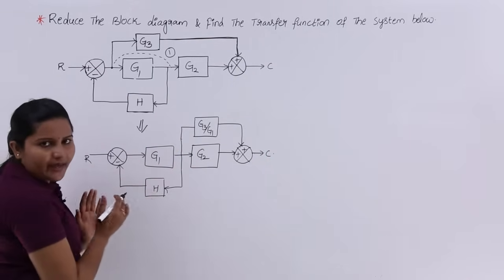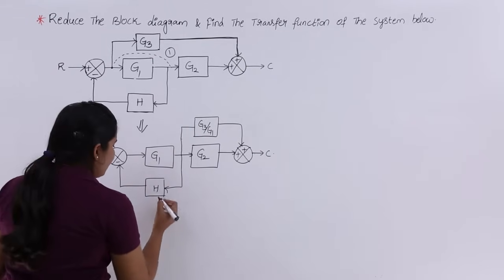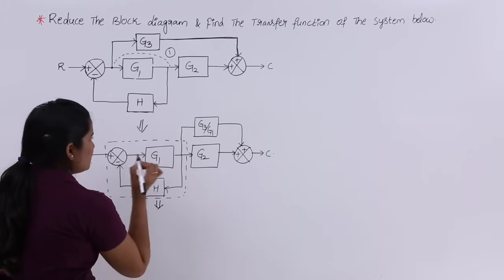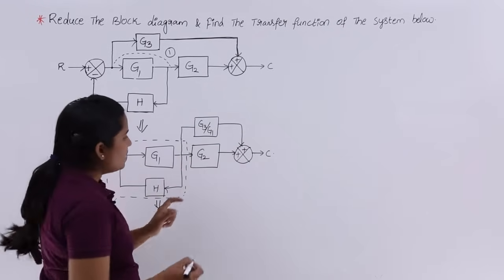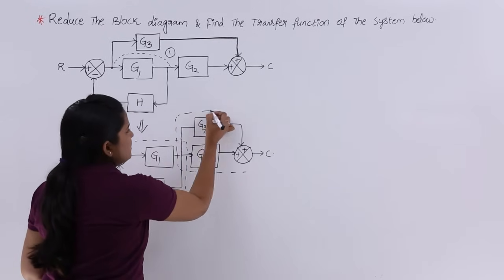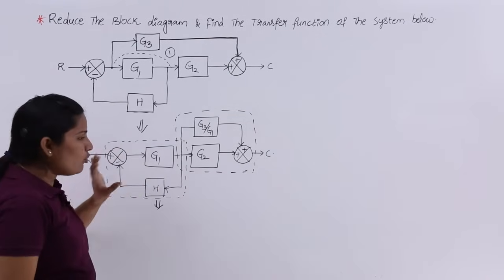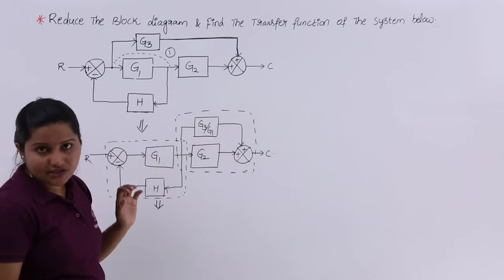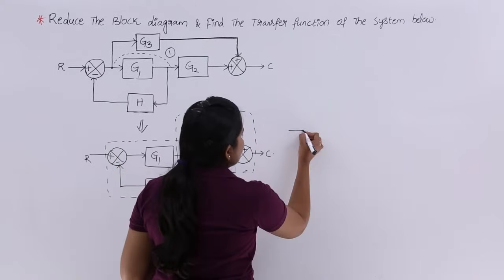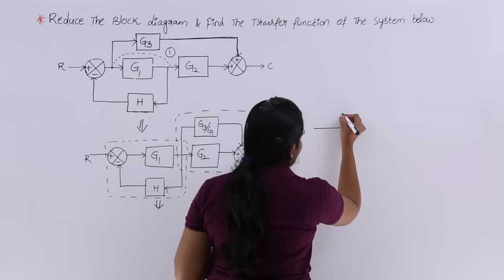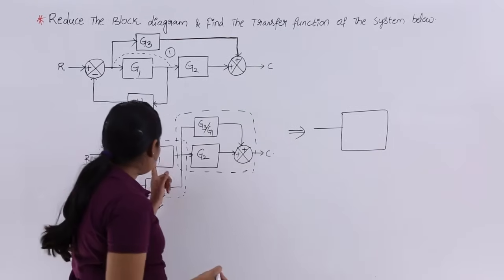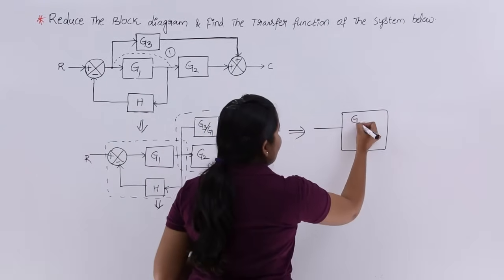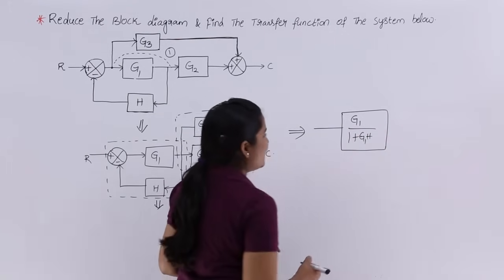Now, to reduce this feedback path I am not having any problem. In the next step I am reducing this feedback path. If you observe, these two elements are in parallel, and these two are also in parallel. So I want to simplify the feedback path and reduce the parallel gains simultaneously. This is a negative feedback, so we use the formula G/(1+GH). The feedback path gain after reducing becomes G1 divided by (1 + G1·H).